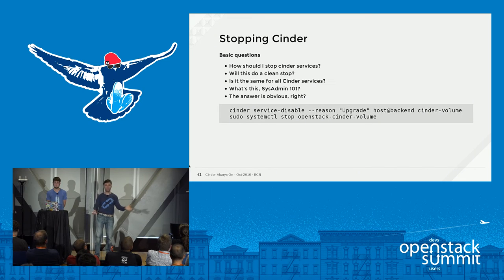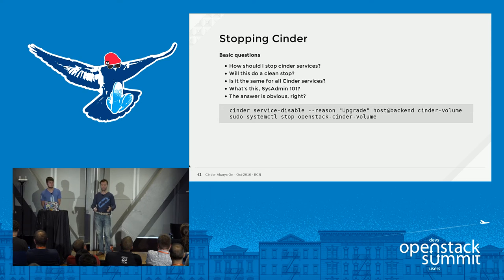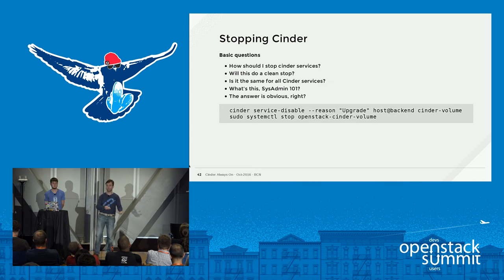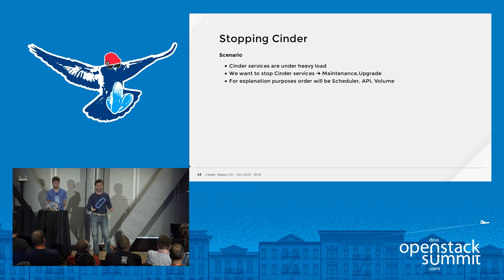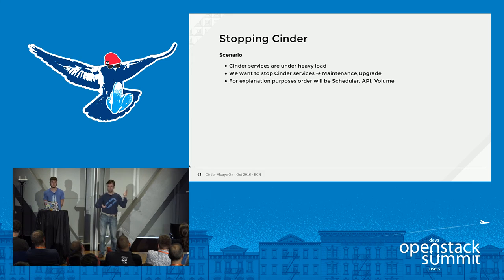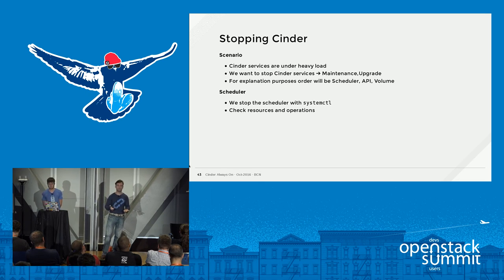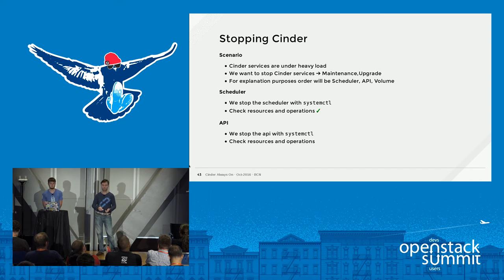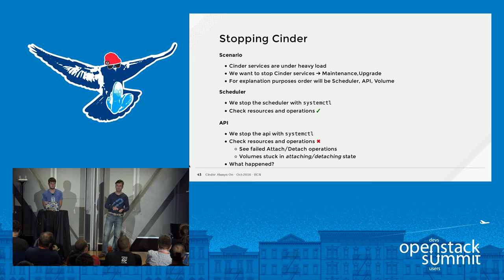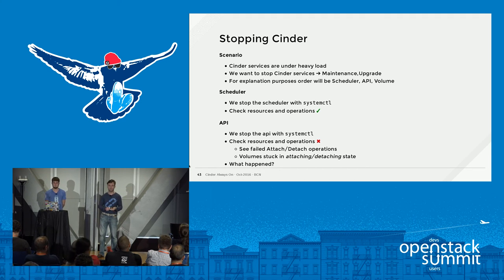One basic thing we all want in Cinder is a clean stop. Usually you either stop the service or disable and stop it, and you expect this to work. Under heavy load, if we stop the scheduler, everything looks fine. But if we try the same with the API, we see resources stuck in attaching and detaching status because operations failed. What happened? Systemd, when you request a stop, sends the terminate signal to all processes within that service, rather than just the parent process.